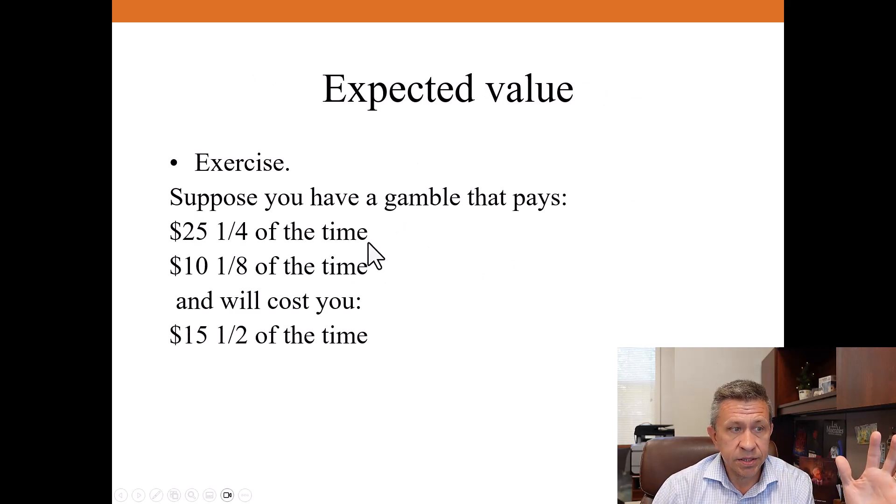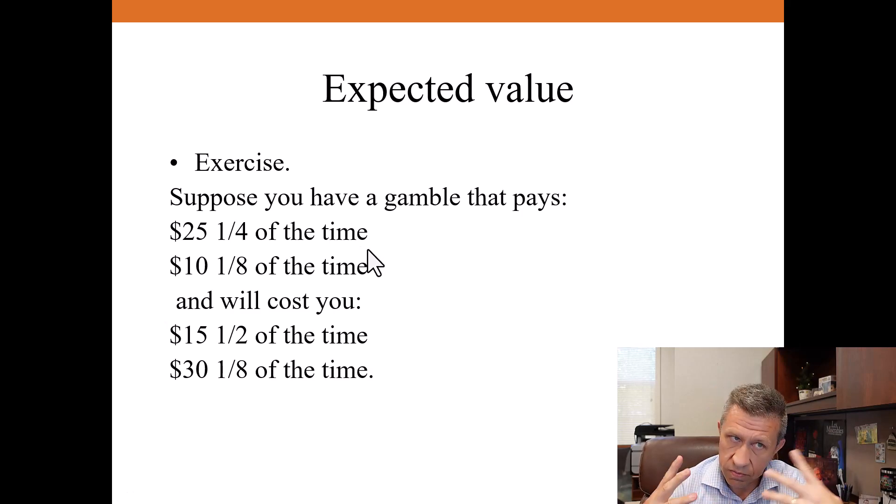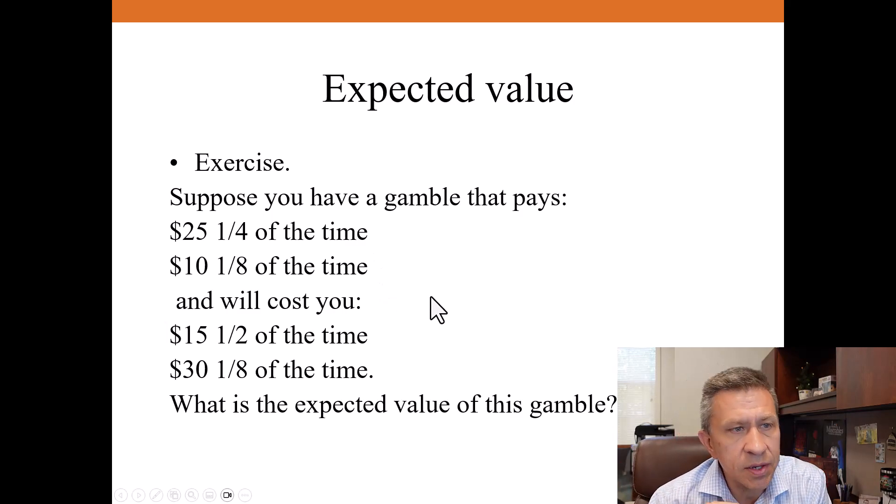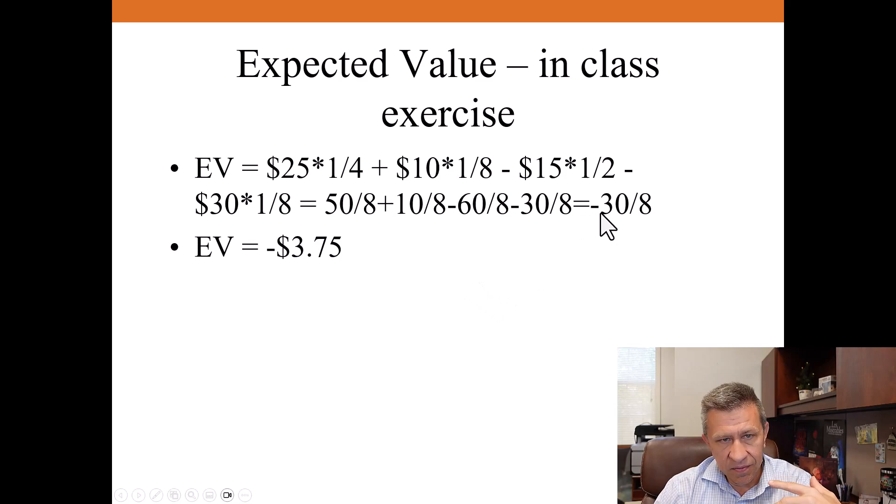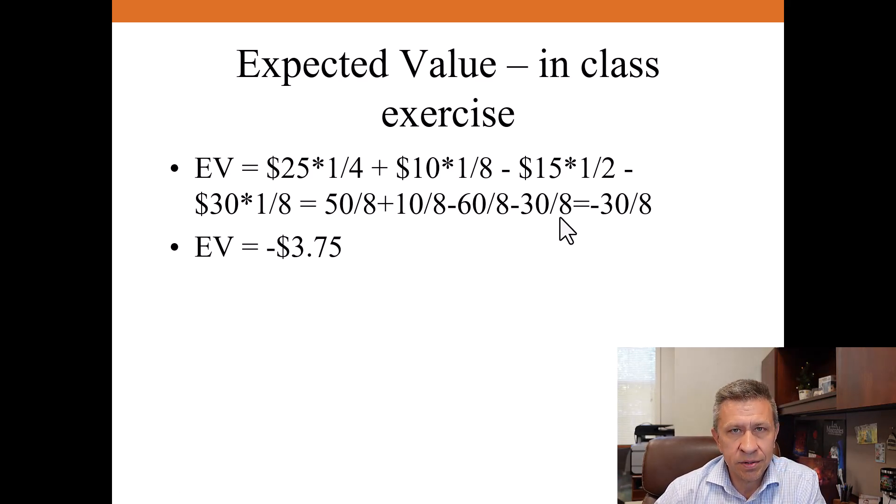Let's go through another exercise. Suppose you have a gamble that pays $25 one-fourth of the time, $10 one-eighth of the time, and will cost you $15 half the time, $30 one-eighth of the time. Why don't you pause the video, pull out a pen and paper or go into Excel and calculate the expected value of this gamble. Calculating this out, 25 times 1/4 plus 10 times 1/8 minus 15 times 1/2 minus 30 times 1/8 ends up being negative 30 over 8. The expected value is negative $3.75.